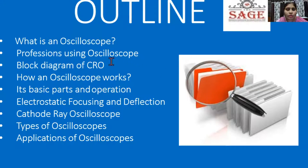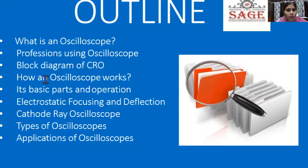The outline of this lecture covers what is an oscilloscope and which professions use the oscilloscope. Then the block diagram of the CRO, cathode ray oscilloscope, how this oscilloscope works, what are its basic parts and operation, and then I will cover the cathode ray tube.